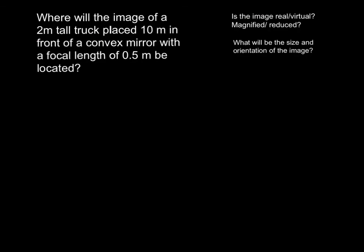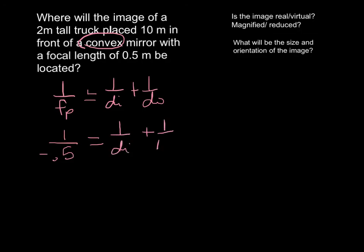Same idea, same question, except for now, our car is in front of a convex mirror. So the difference is, the only difference is, we're using the same equation, 1 over our focal point is 1 over DI plus 1 over DO, same equation, but since it's a convex mirror, remember a convex mirror has a negative focal length, so we're going to make this a negative 0.5 is equal to 1 over DI plus 1 over 10.